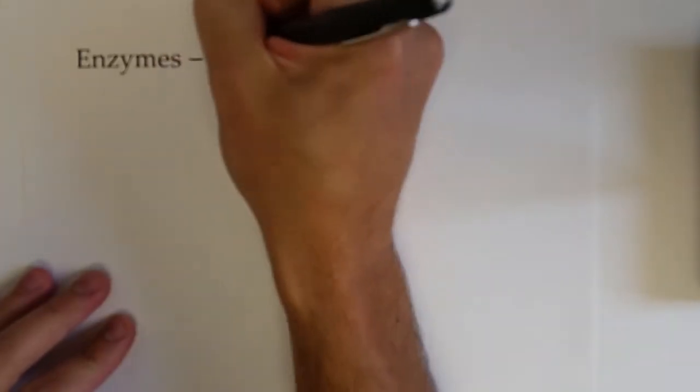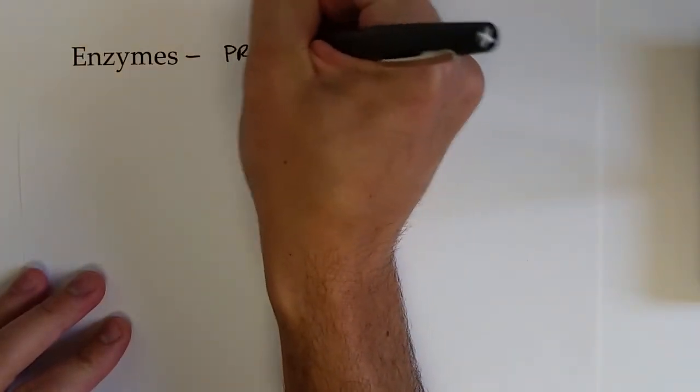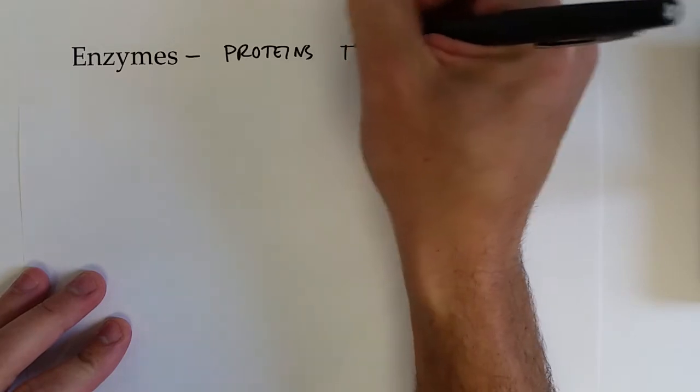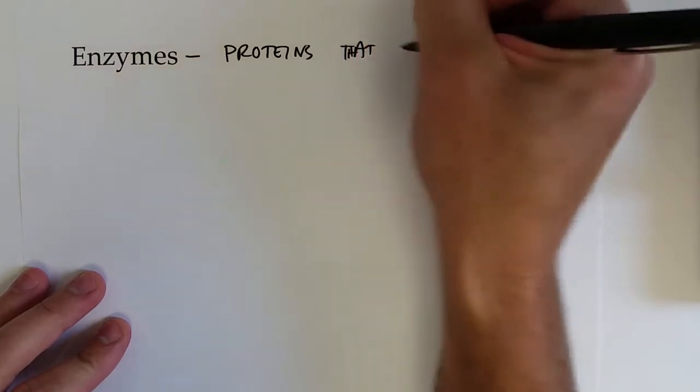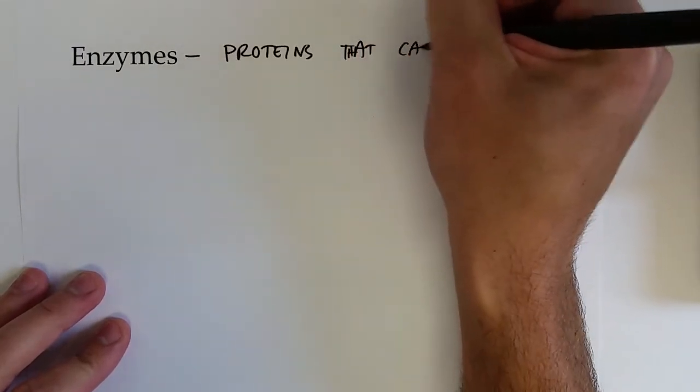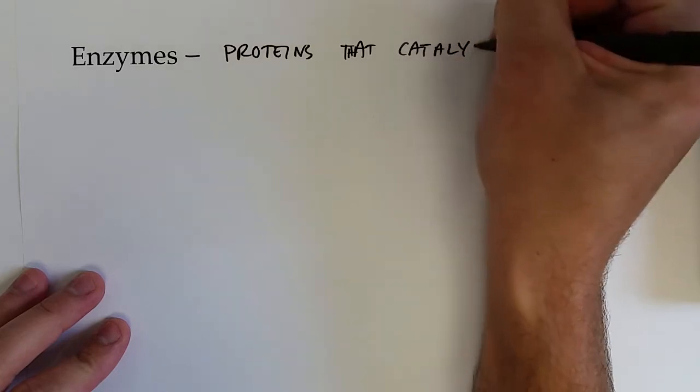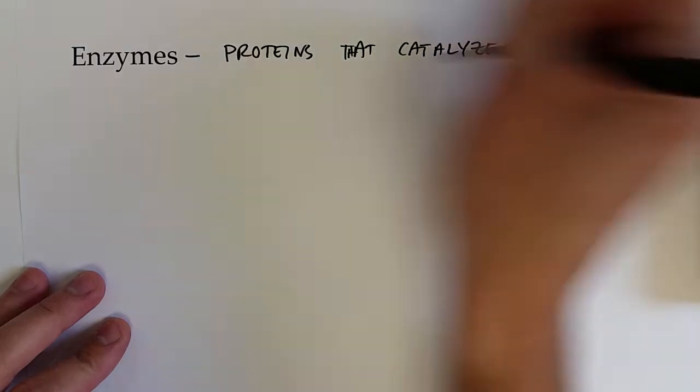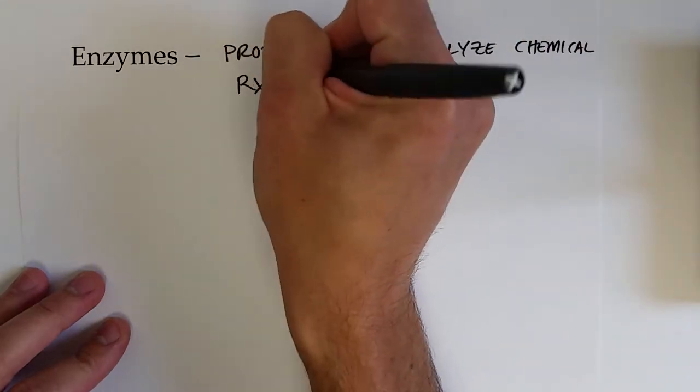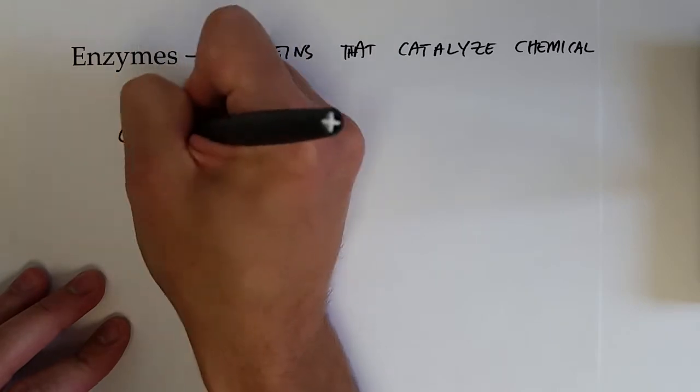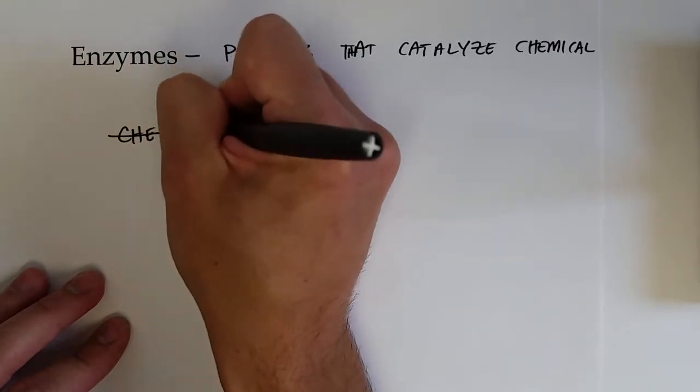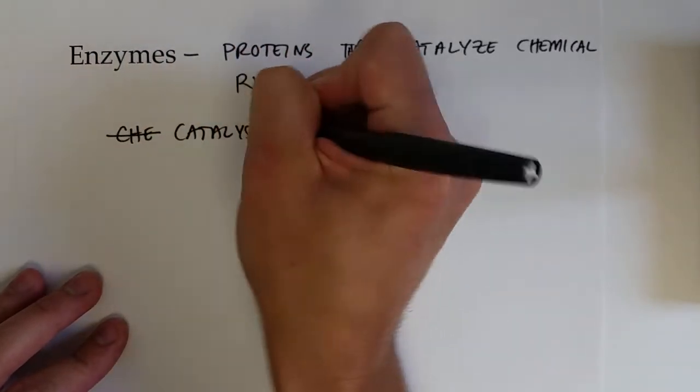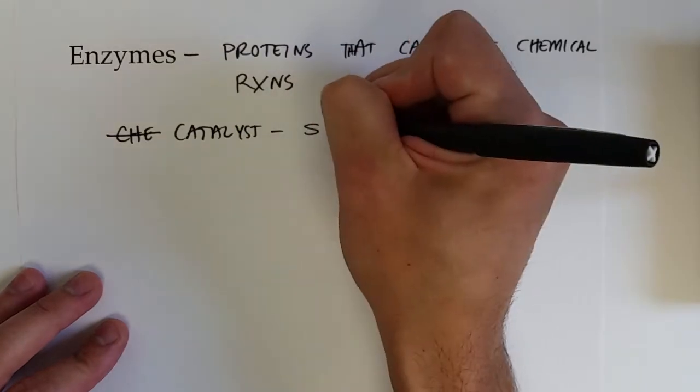Our next topic is enzymes. Enzymes are proteins or protein complexes that catalyze chemical reactions. As you read previously, a catalyst is any substance that speeds up the rate of a reaction.